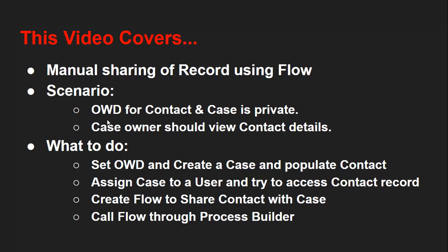The scenario is: in my org, OWD for contact and case object is private. If the case owner can access a particular case, then that owner should be able to view the contact details as well. Basically, if I am the owner of the case and the contact is populated on that case, but the owner of that contact is another user, then I should still be able to view the contact details.